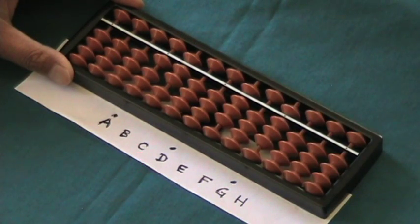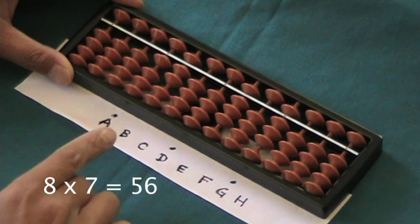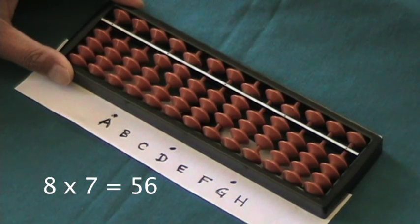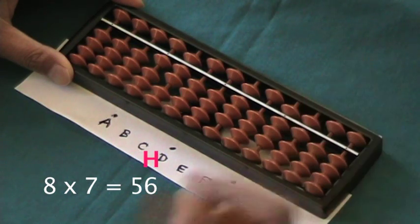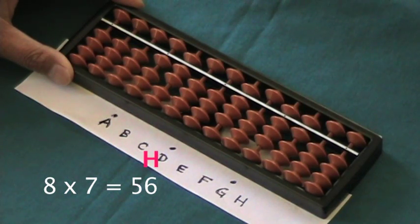Now, we'll multiply the 8 by the second digit of the multiplier, the 7, and set the product. 7 times 8 is 56 on rods G and H. First, we'll add the 6 of the 56 on rod H. And then, we'll add the 5 on rod G.